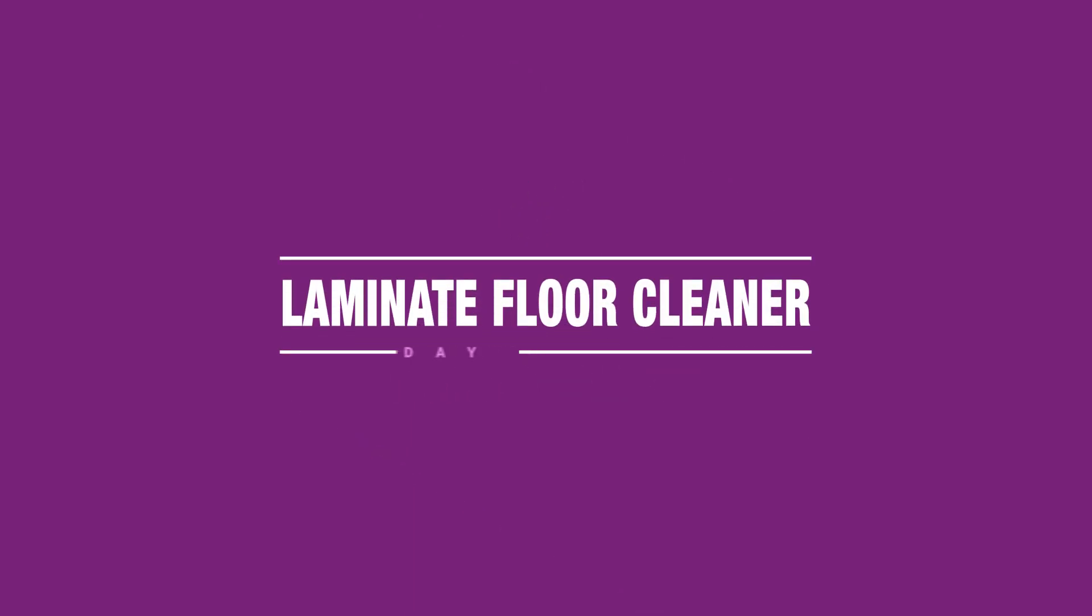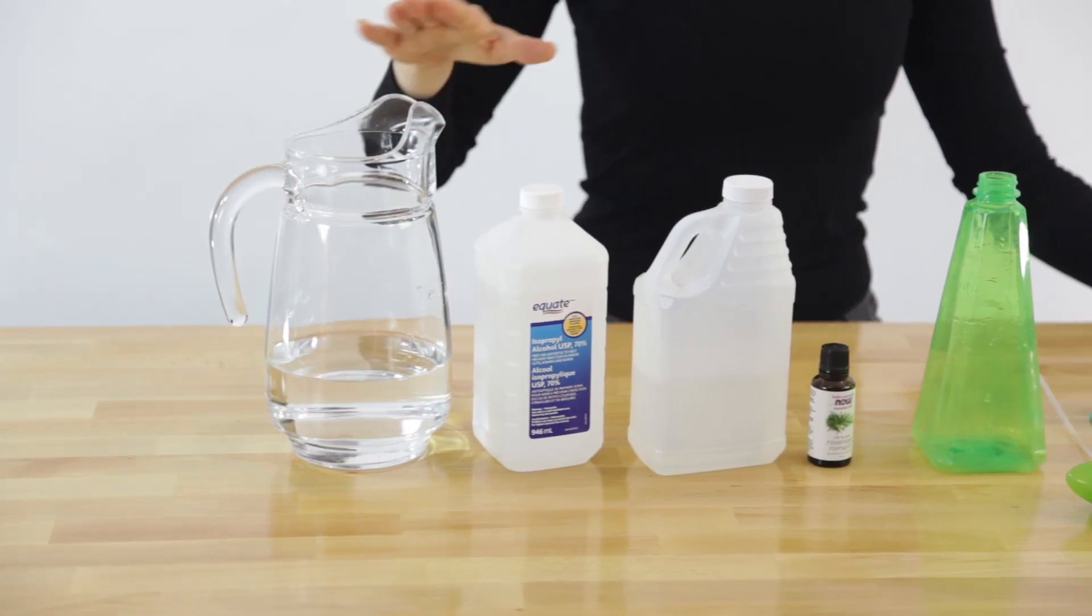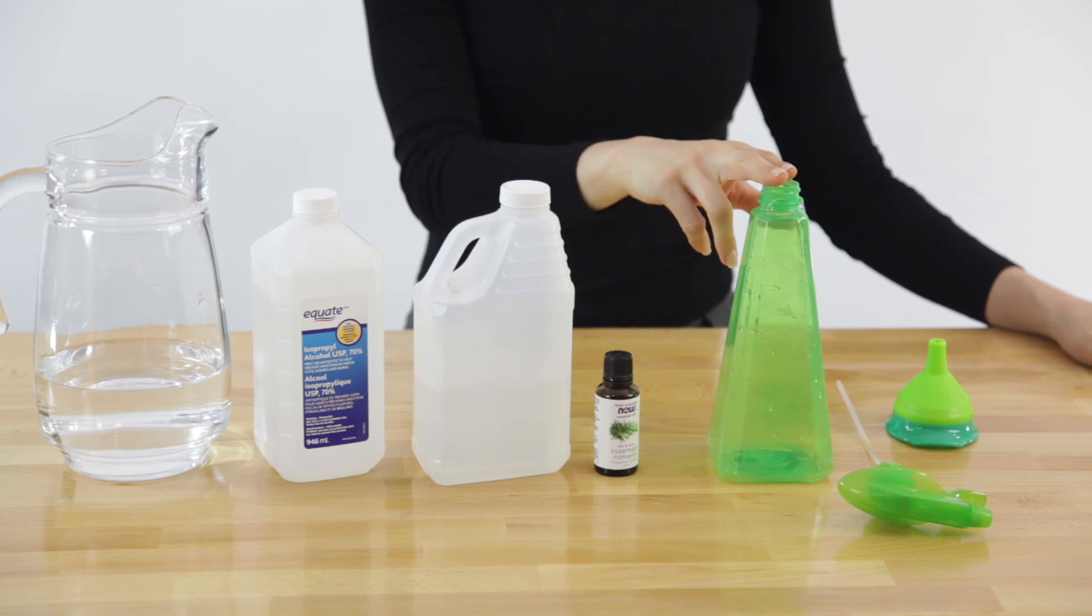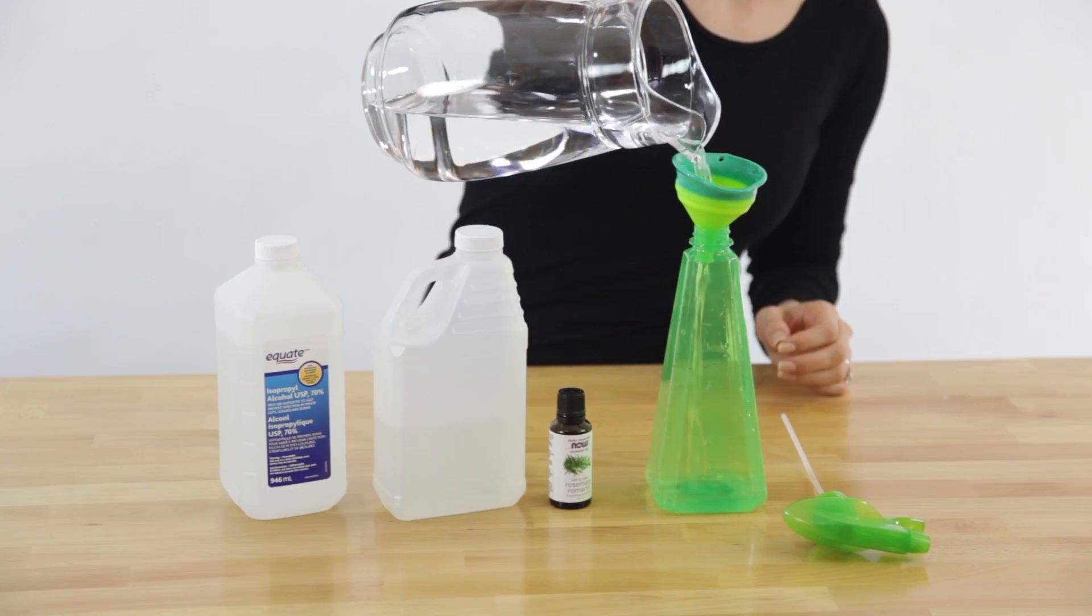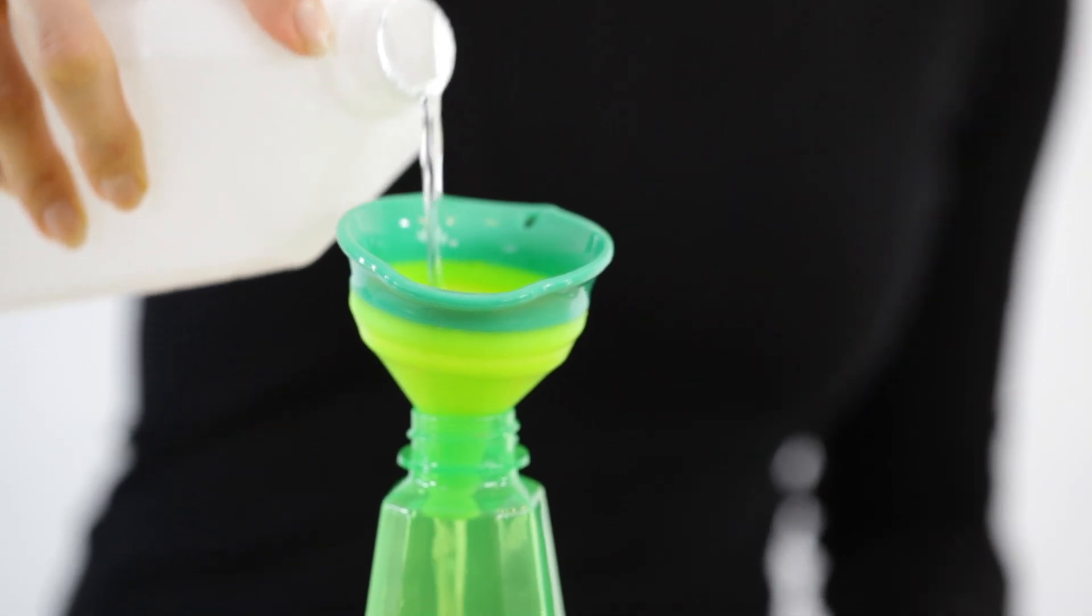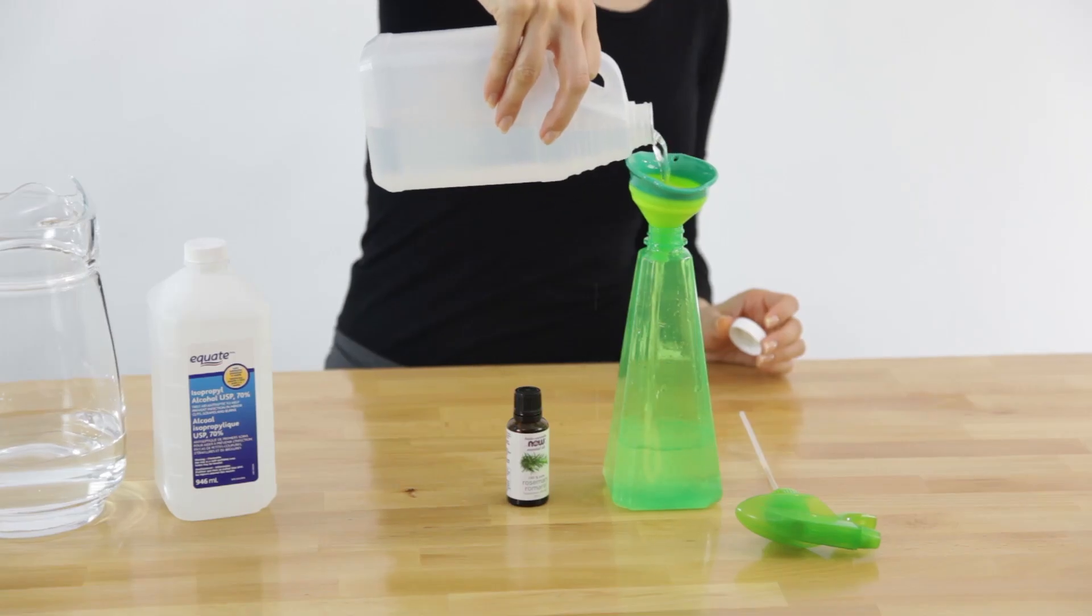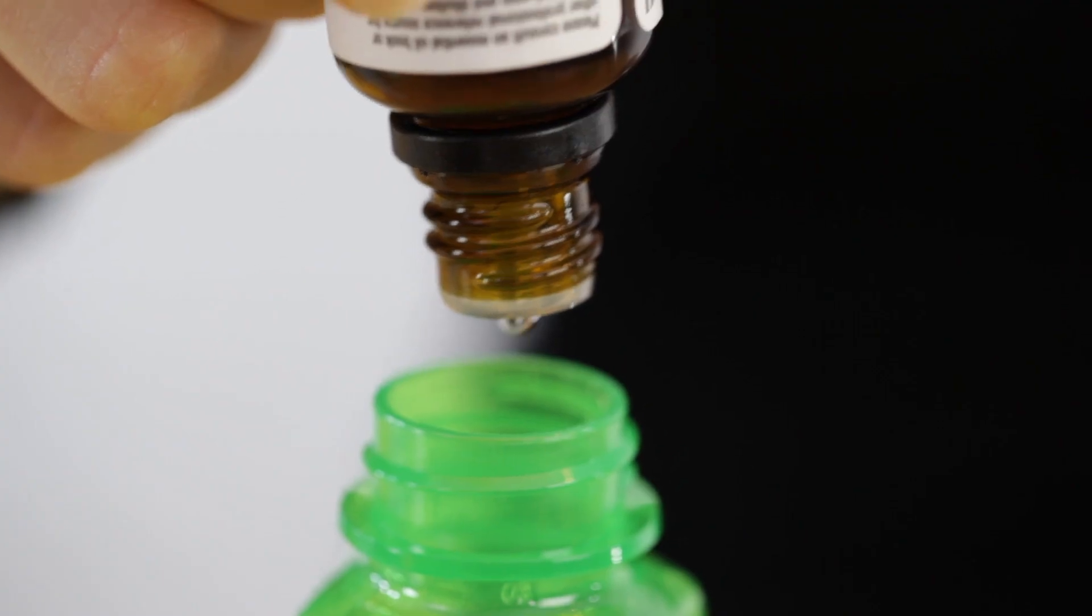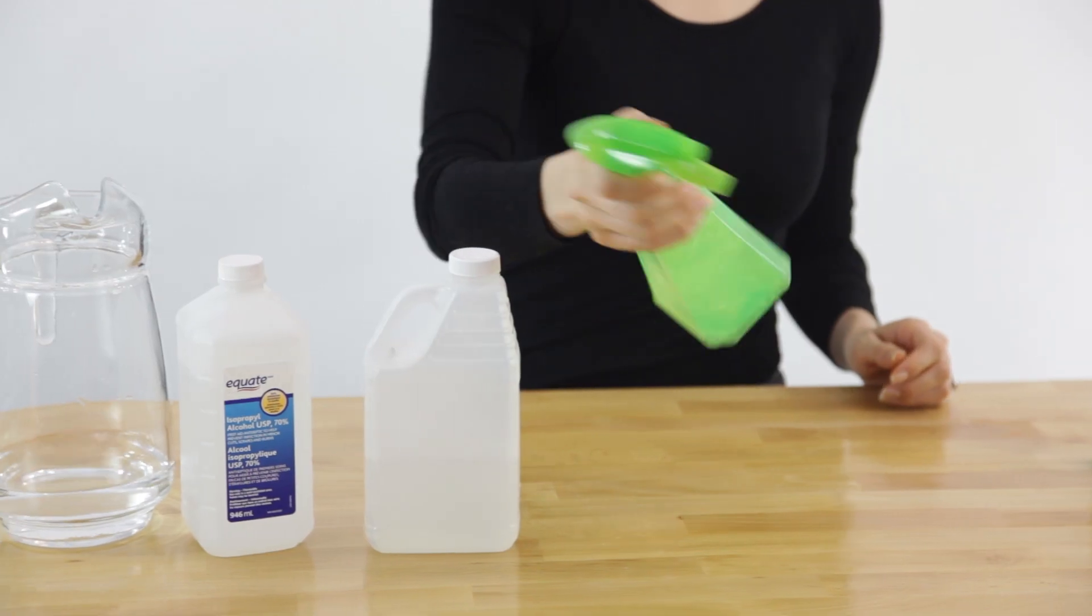Let's make a laminate floor cleaner. For this recipe you'll need water, rubbing alcohol, white vinegar, essential oils, and a spray bottle. Start by adding half a cup of water, then half a cup of rubbing alcohol, and finally half a cup of white vinegar. If you want, add 10 drops of your favorite essential oil. Mix these ingredients together in a spray bottle and shake well.